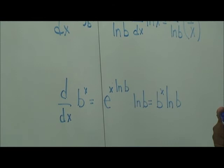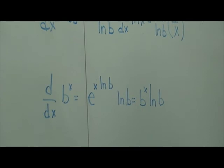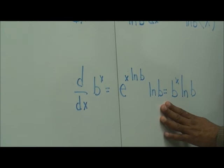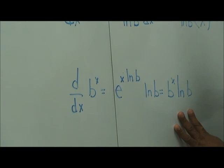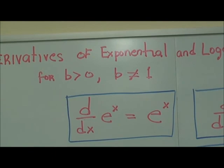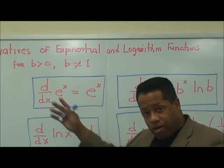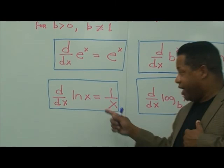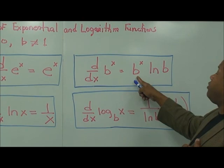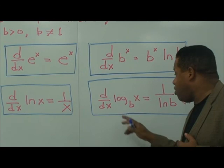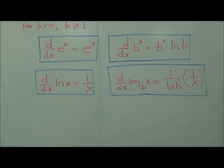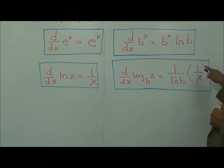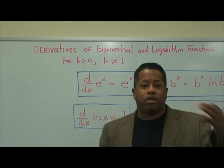Here are our basic exponential and logarithmic derivative formulas: the derivative of e to the x is e to the x; the derivative of the natural log of x is 1 over x; the derivative of b to the x is b to the x times the natural log of b; and the derivative of log base b of x is 1 over ln b times 1 over x. We're going to do some problems in part two of this video, so stay tuned and we'll see you in a few minutes.